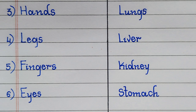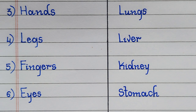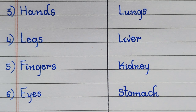Other examples of external body parts are hands, legs, fingers, and eyes. Other examples of internal body parts are lungs, liver, kidney, and stomach.